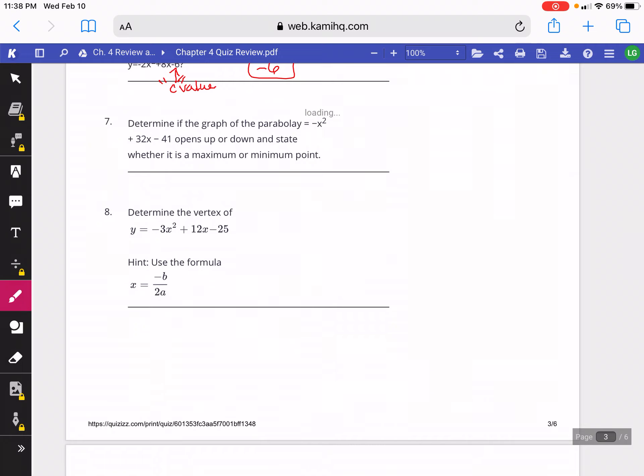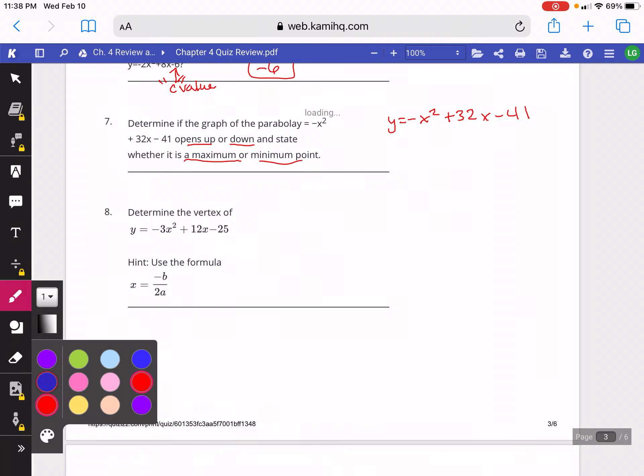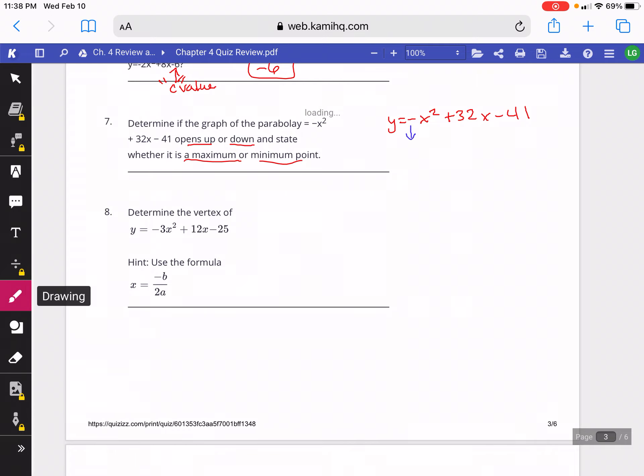This next question says we have a parabola y = -x² + 32x - 41, and it wants to know if it opens up or down and whether it has a max or min. So here, since it's negative, it's going to be opening downward. And since it's opening downward, if you try to visualize it opening downward, the vertex is a high point. Since it's a high point, it's a maximum.